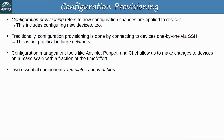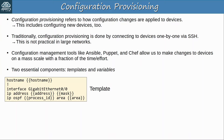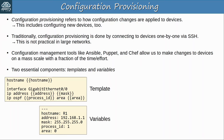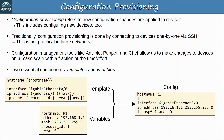Two essential components found in all of these tools are templates and variables. A template is a configuration file where specific values aren't given for things like the hostname, IP address, mask, OSPF process ID, and area. Instead, we use a separate file specifying the variables for a specific device — R1 in this case. Given a template and the appropriate variables, a config is generated and sent to the device. All devices can share the template, and we just need to specify some variables like hostnames and IP addresses. Exactly how these templates and variables are managed differs depending on the tool, but they all use a system like this.